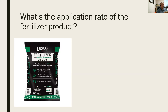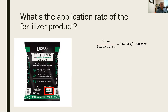Now we need to know the application rate of the fertilizer product. Most products provide directions on how much to apply per unit of area. Looking at the front of this bag, outlined in red, it says this 50-pound bag covers up to 18,750 square feet. To find the rate per 1,000 square feet, we divide 50 pounds by 18.75 — which is 18,750 expressed in thousands of square feet — giving us an application rate of 2.67 pounds per 1,000 square feet.